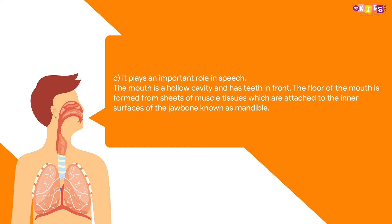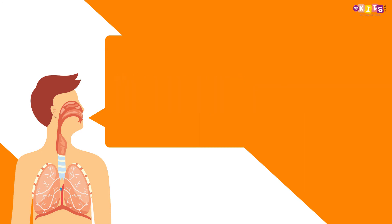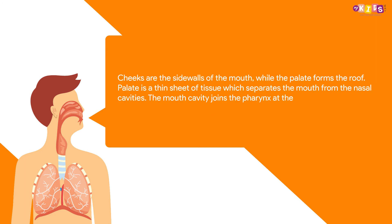The mouth is a hollow cavity and has teeth in front. The floor of the mouth is formed from sheets of muscle tissues which are attached to the inner surfaces of the jawbone known as the mandible. Cheeks are the sidewalls of the mouth, while the palate forms the roof. The palate is a thin sheet of tissue which separates the mouth from the nasal cavities. The mouth cavity joins the pharynx at the back, and the mouth is lined by the mucous membrane.